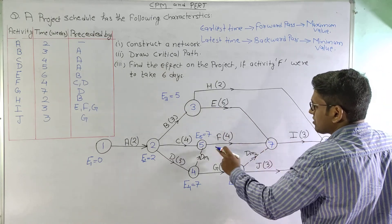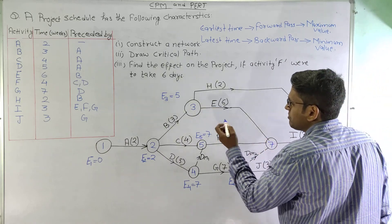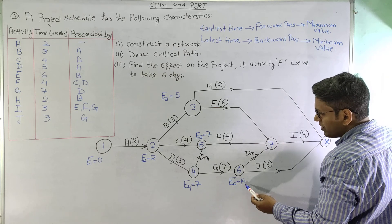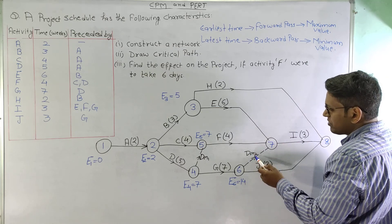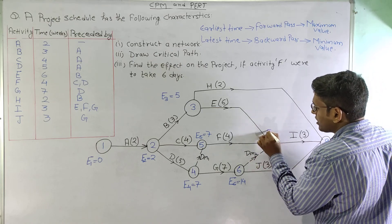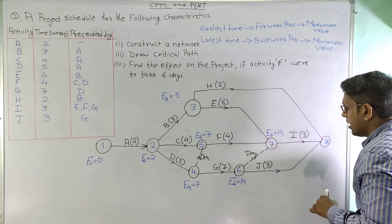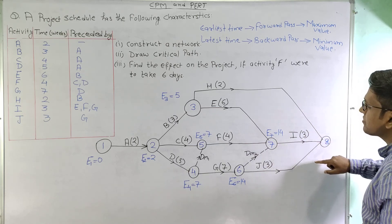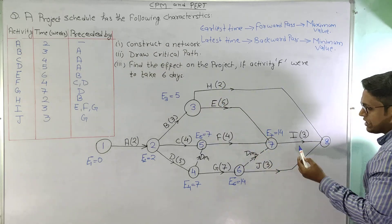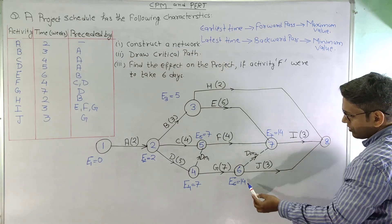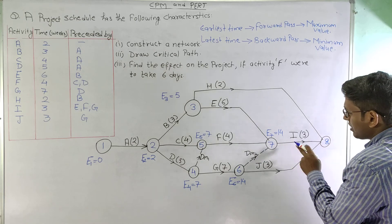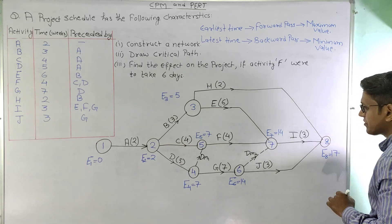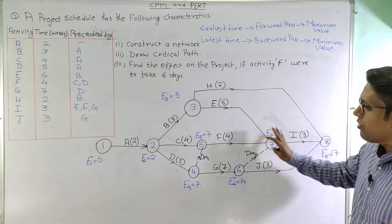At node 7, three arrows are coming in: 5 + 6 = 11, 7 + 4 = 11, and 14 + 0 (dummy) = 14. We select the maximum value, so E7 = 14. At the final node 8, three activities come in: 5 + 2 = 7, 14 + 3 = 17, and 14 + 3 = 17. The maximum value is 17, so E8 = 17 weeks.